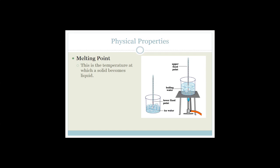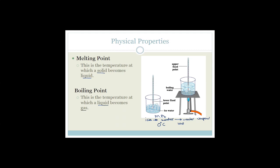More physical properties: melting point is the temperature at which a solid becomes a liquid. We spoke about ice becoming water — the temperature at which ice becomes water, which we know is 0°C, is called the melting point. Different substances have different melting points. Boiling point is the temperature at which a liquid becomes a gas. Water becomes water vapor at 100°C — that is the boiling point. Those are important physical properties.